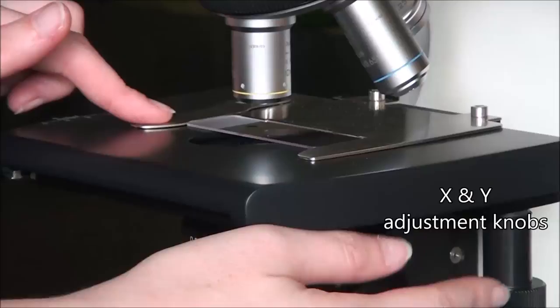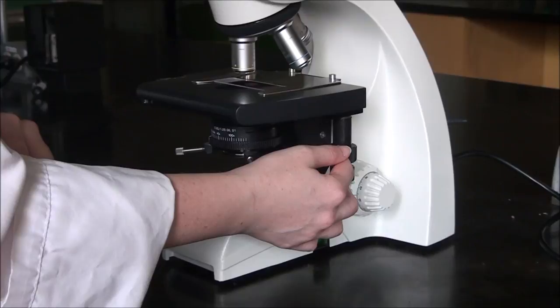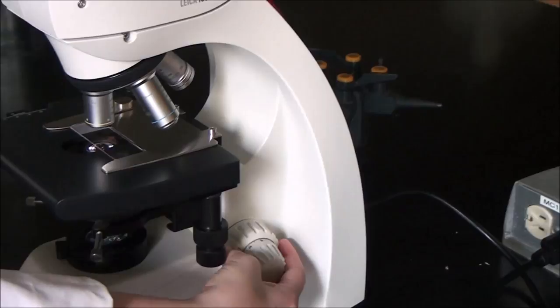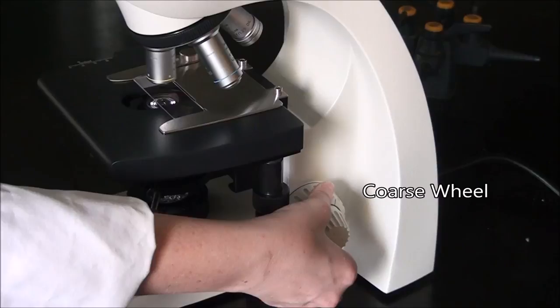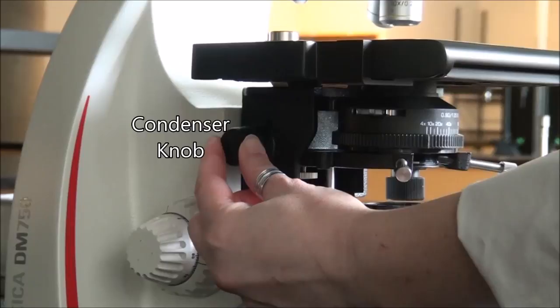Raise the stage to its highest position using the coarse wheel on the right or the left. Turning the wheel away from you raises the stage. We're going to do that until we can't go any further, turning it away from you to raise it to its highest position.